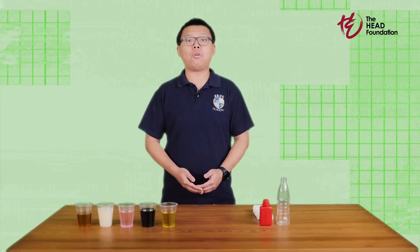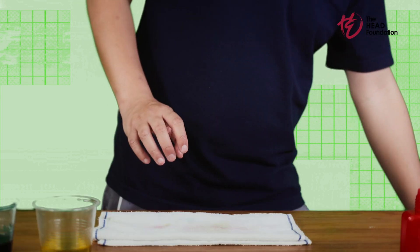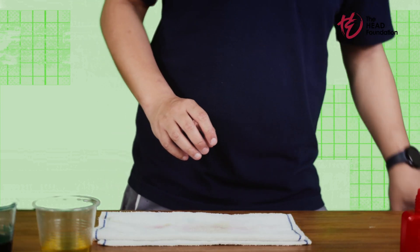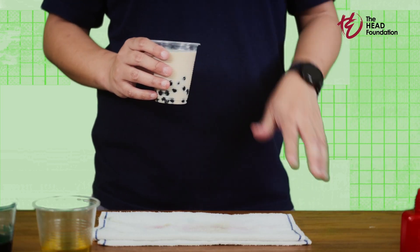You can use as few as two or three liquids, or as many as you like. Additionally, you also need food colouring and a clear container. For this, I'm using a recycled plastic bottle. Finally, bubble tea with tapioca pearls is also required.